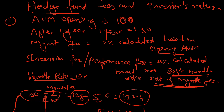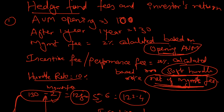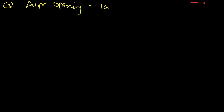Now let's do another sum where I use slightly different terms. Instead of soft hurdle rate I will use hard hurdle rate, instead of net management fee I'll use gross management fee, and instead of opening assets under management I'll use closing assets under management.